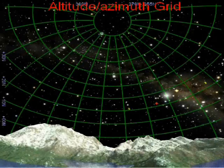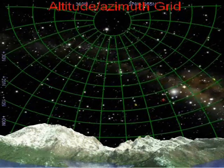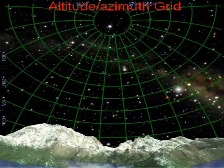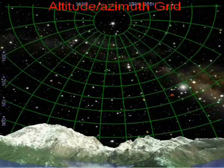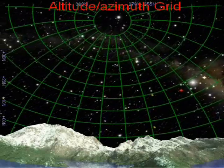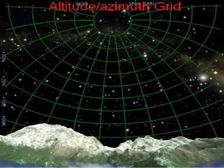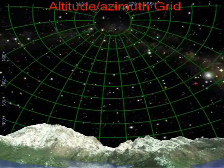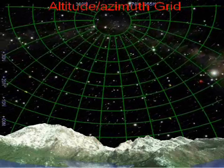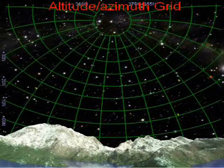Coordinates. The sky chart shows lines of azimuth and altitude. The azimuth of an object is generally reckoned from north, increasing in the clockwise direction, and ranges from 0 to 360 degrees.